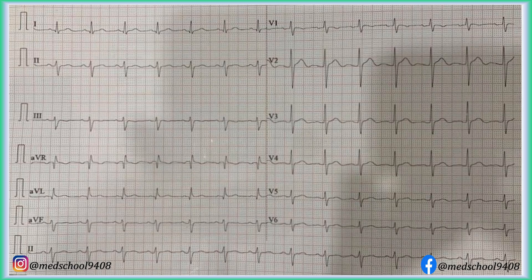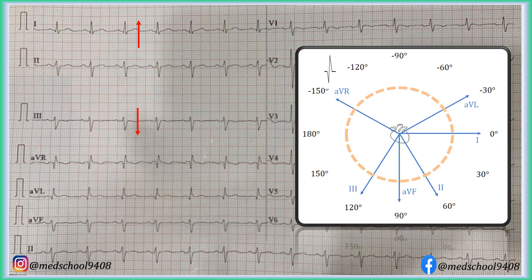There is left axis deviation as QRS in leads 1 and 3 are leaving each other. Finding the QRS axis direction: the equiphasic QRS is in lead AVR, so the QRS axis should be perpendicular to the AVR lead axis, giving a QRS axis direction of minus 60 degrees. There is a QR pattern in lead AVL, and an RS pattern in leads 2, 3, and AVF. QRS duration is also normal. Therefore, this ECG is suggestive of left anterior fascicular block.